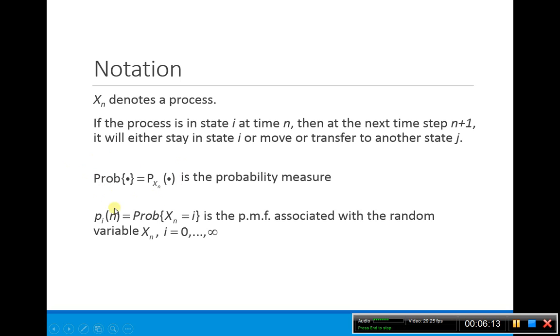This is just another notation here. This is just the probability measure. Normally this XN is typically suppressed. You just normally have the probability. And here, since we're talking about discrete time, this is the PMF that's associated with the random variable XN.